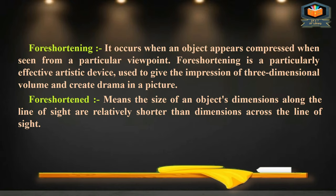Foreshortening occurs when an object appears compressed when seen from a particular viewpoint. It is a particularly effective artistic device used to give the impression of three-dimensional volume and create drama in a picture. Foreshortening means that the dimensions of an object along the line of sight are relatively shorter than dimensions across the line of sight.